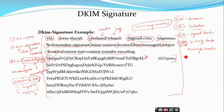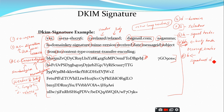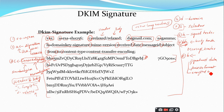The eighth and last entity is b — b represents the signature data, represented in Base64 format. This is the encrypted hash code. These are all the various entities in the DKIM signature.